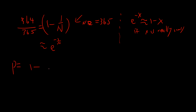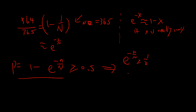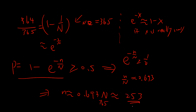So the probability becomes 1 − e^(−n/365). Setting this larger than 0.5 and solving, you take the log base 2, and get n ≈ 0.6931 × 365, which gives n ≈ 253. So the answer is 253.